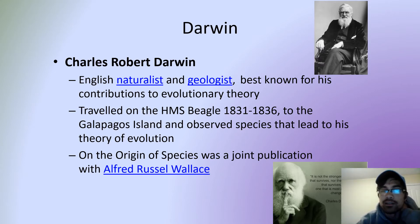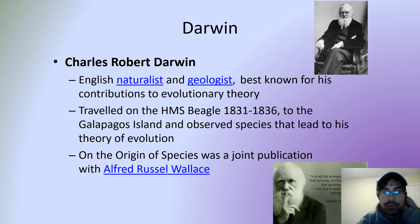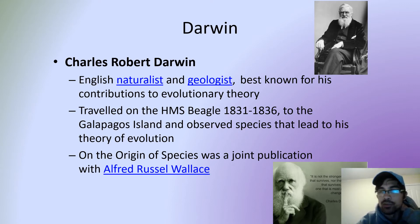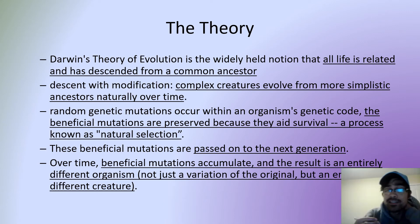He noted some of the similarities between species, which helped him develop his theory of evolution. The Origin of Species was a publication that talked about this theory, and it was actually a joint publication with another person named Alfred Russell Wallace, who had some ideas that helped contribute to the overall concept, though Darwin tends to be the more well-known of the two.